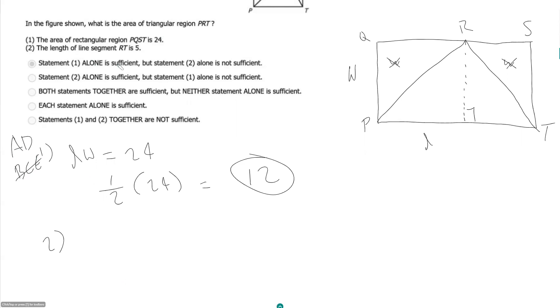Statement 2 just says the length of line segment RT is 5. So that's this guy over here. And based on that, I don't think we can really do anything.